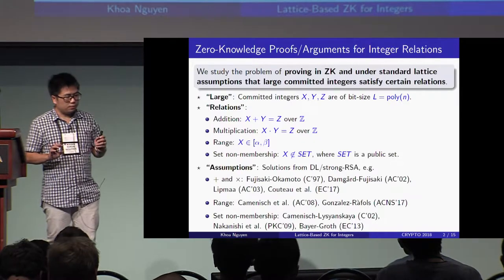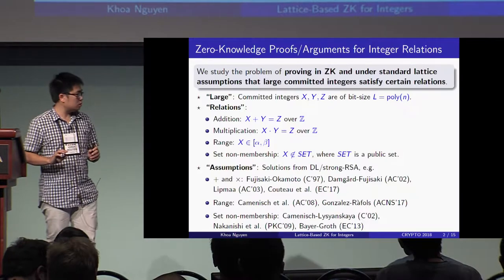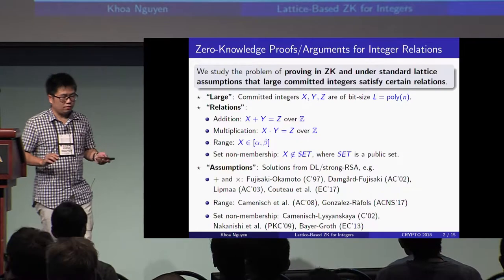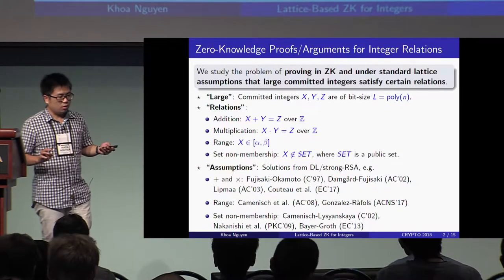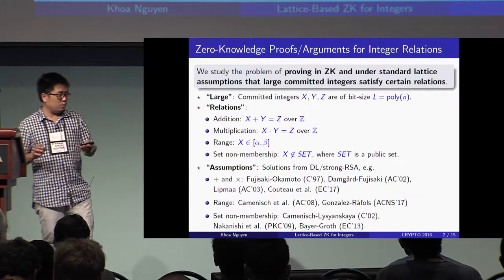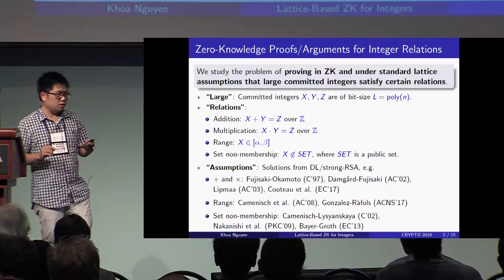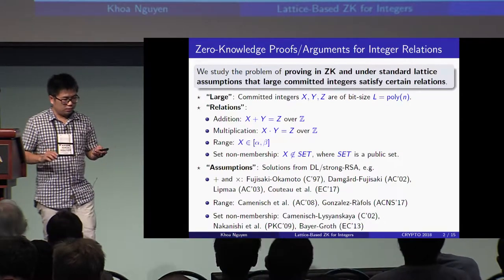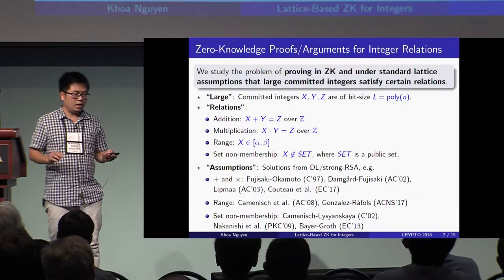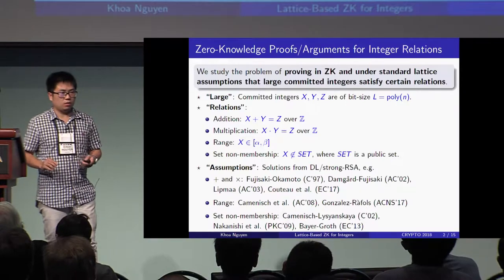The problem has been receiving considerable attention and many solutions have been given, some of them really efficient — for example, the protocol by Kuto, Bitters, and Bolsheván in ZeroCrypt last year, or the set non-membership argument system by Bayer and Gross in ZeroCrypt 13. However, these existing solutions are based on number-theoretic assumptions like discrete log or strong RSA, and they are vulnerable against quantum adversaries.